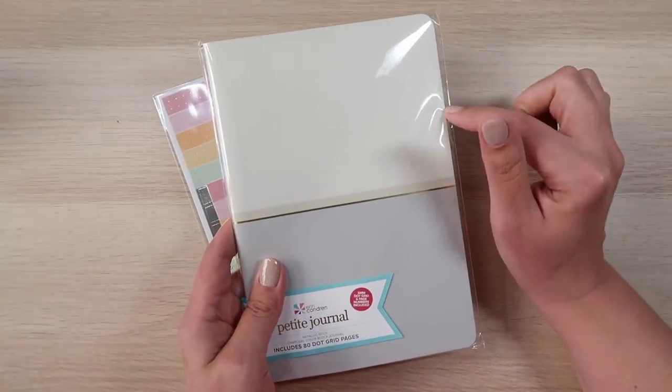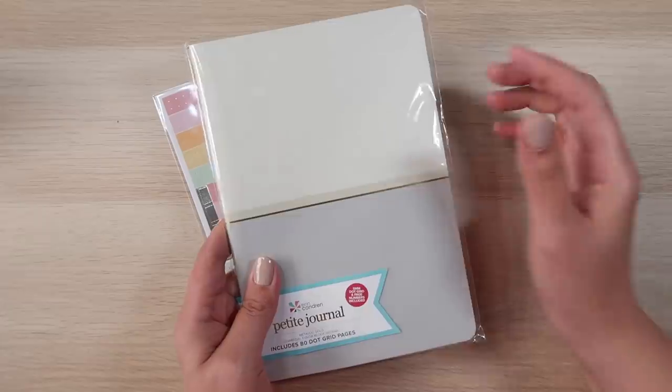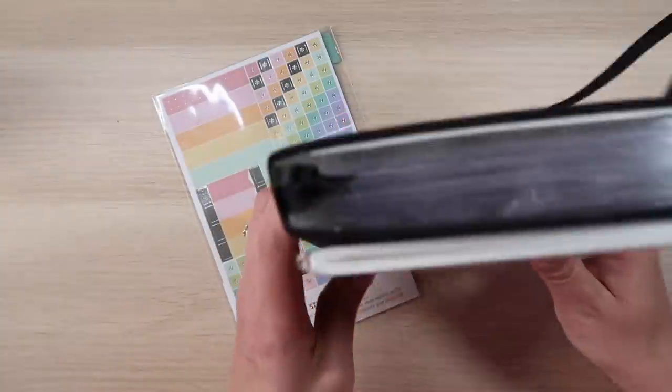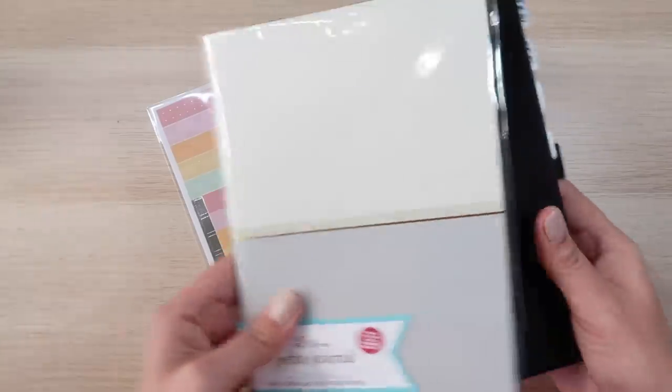Looking at the specs, the journals are 5.7 inches by 8.25 inches, about A5 size. Here's my A5 Archer and Olive. They're basically the same size as each other.